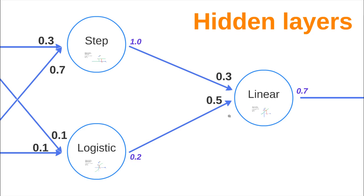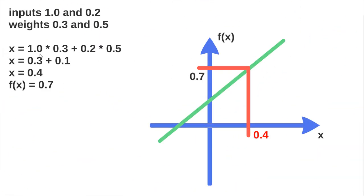Let's see how this neuron, which has an activation function of the linear type, works. We perform the same computation as we said before: 1.0 times 0.3 plus 0.2 times 0.5.